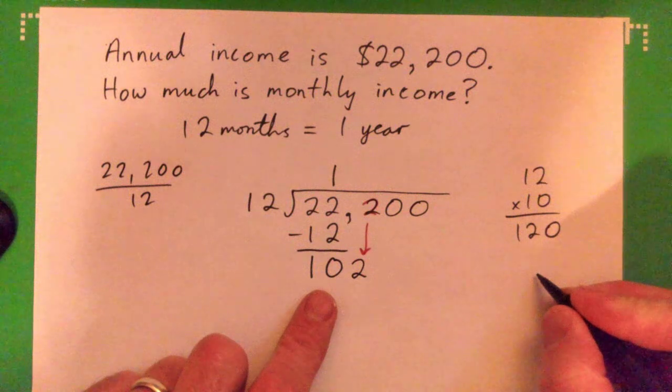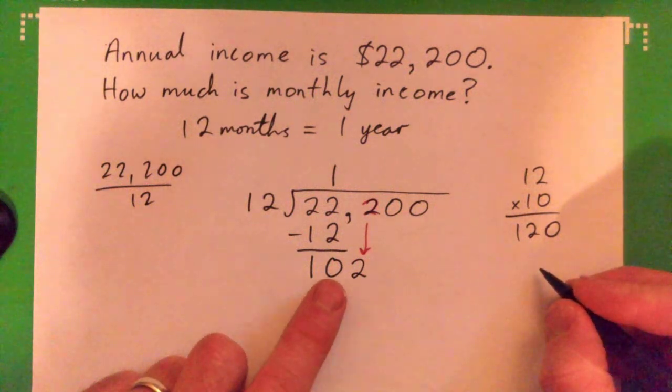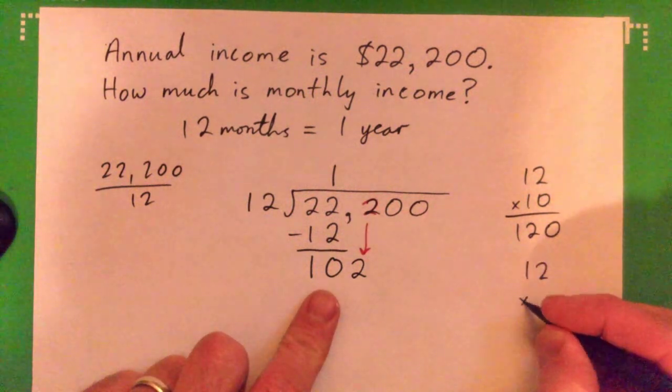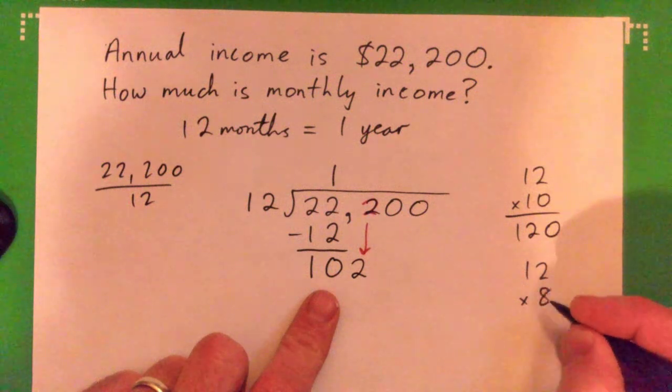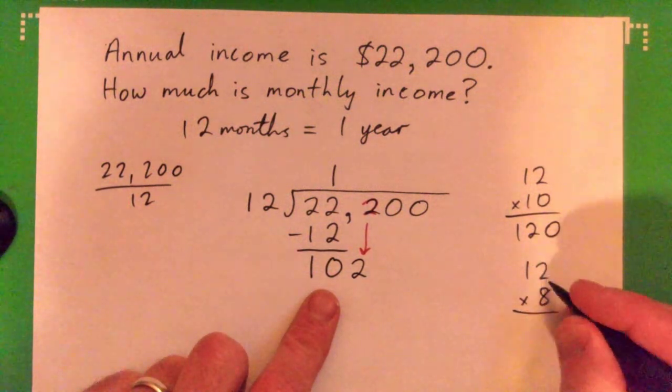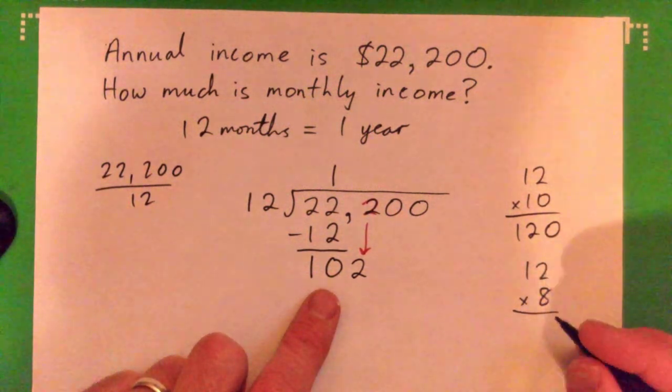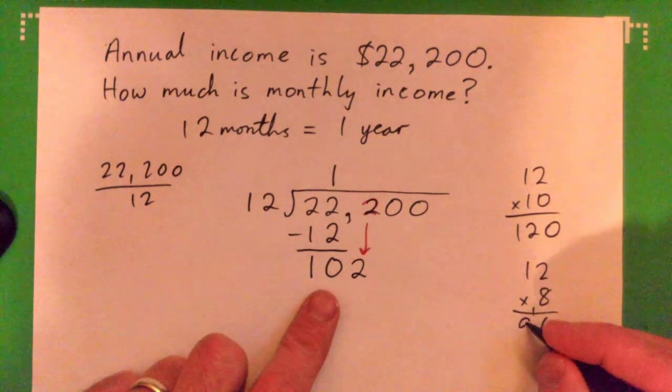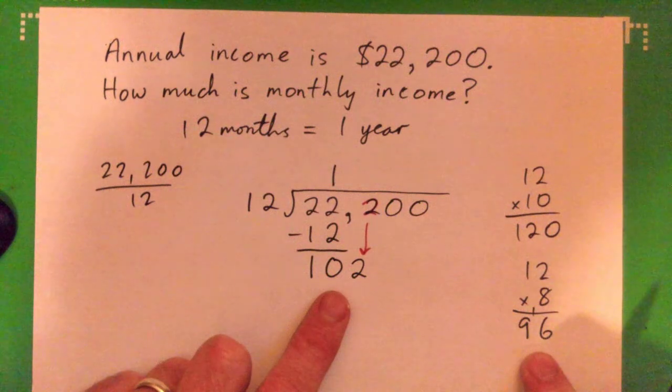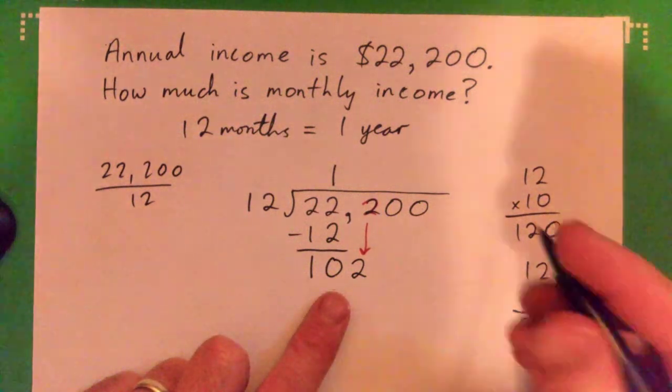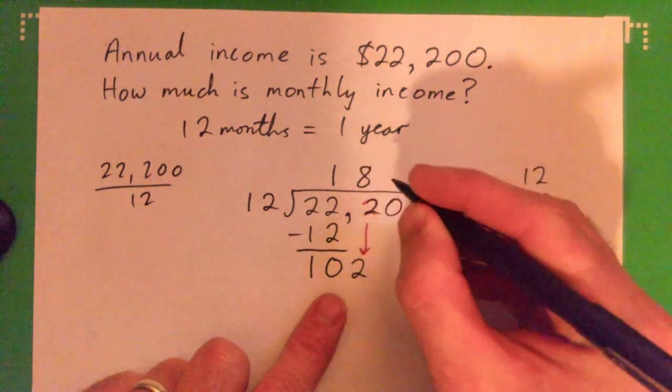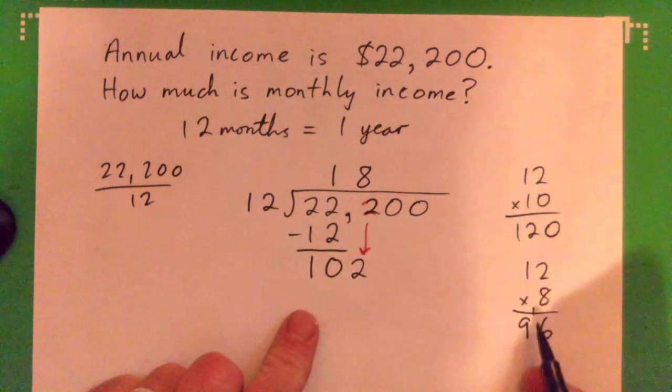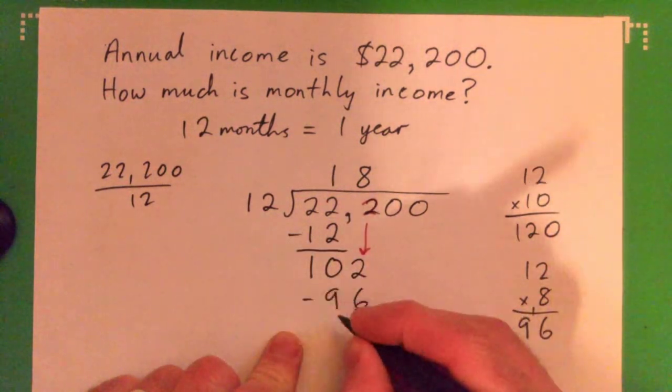12 times 9, and then maybe 8 you say? Okay, 8 times 12. 8 times 2 is 16, carry 1, 8 times 1 is 8 and 1 is 9, 96. What do you think? That looks good, doesn't it? Try 8. Good, so 8 times 12 we just did that, 96. Now subtract, and what do we get?